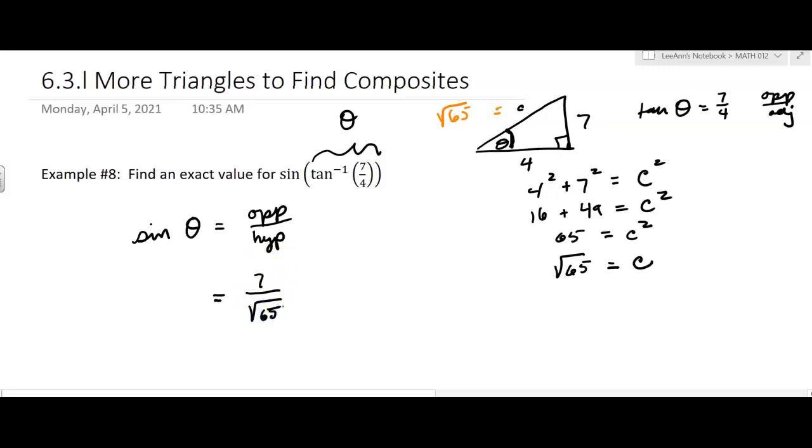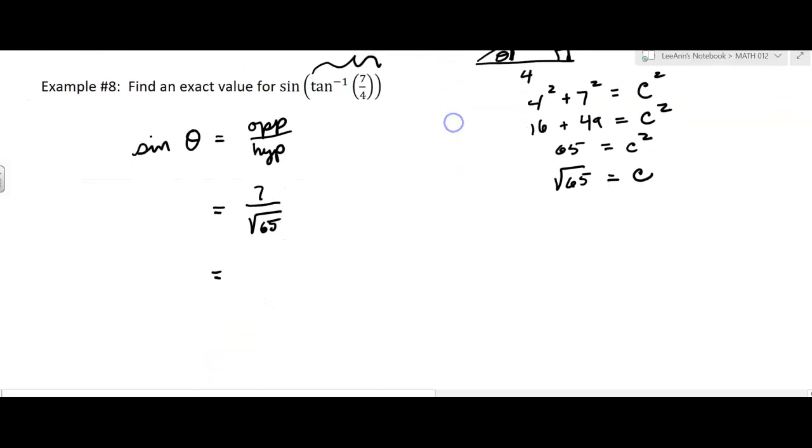If they do want you to rationalize the square root of 65. Now if it's been a while since you've worked with radicals, 65 is 13 times 5. So it's not going to simplify. You can't take the square root of 13 or 5. And it doesn't break down anymore. But you do have to multiply by the square root of 65 over the square root of 65 to rationalize it. So you're going to have 7 times the square root of 65 over 65.